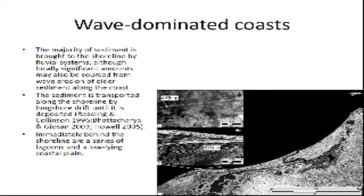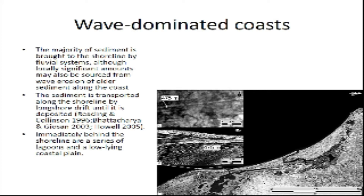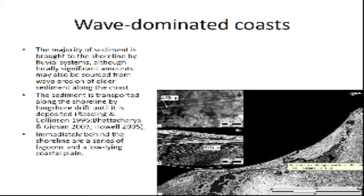Now, going back to today's topic: wave-dominated coastal depositional environments, which are also known as beach strand plains. A good example of a beach strand plain system is the coast of Nayarit in Mexico, shown here in aerial map view. The sediment source of beach strand plain systems is mainly from rivers. However, rivers here are very weak compared to the strong river input associated with fluvial-dominated deltas. Notice there are two small rivers here supplying sediment to the sea off the coast of Nayarit. Because of the weak river input, the river mouths do not form lobate deltas. Sediment laid down at the river mouths in a wave-dominated setting is rapidly reworked by the stronger waves.